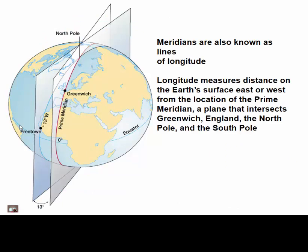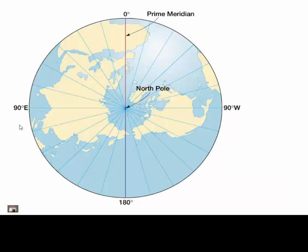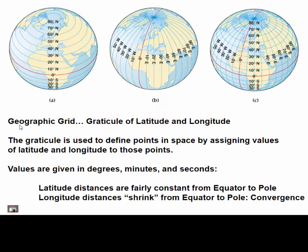We also have meridians, which are lines of longitude that meet at the poles. We have something called the prime meridian, which runs through zero degrees longitude, just to the west of London, England. You can see the prime meridian using this particular projection here. The graticule is the intersection of your lines of latitude and your lines of longitude, allowing us to assign unique coordinate values to every point on the surface of the earth.